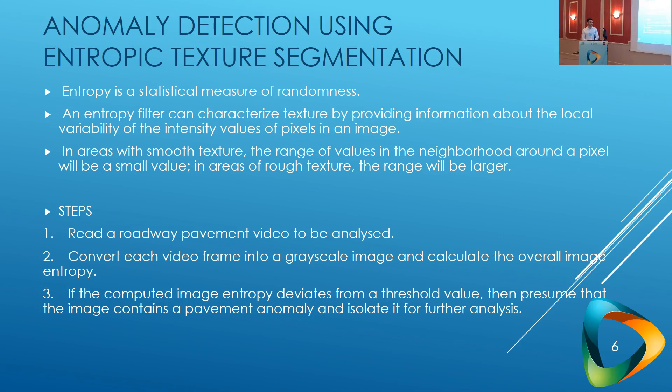The first phase of our method uses entropic texture segmentation to classify images that include anomalies and images that do not. Entropy can be defined as a statistical measure of randomness, and an entropic filter can characterize the texture by providing information about the local variability of the intensity values of pixels. Smooth areas usually have a small range of values in the neighborhood around a pixel, and the opposite is true for rough texture areas.